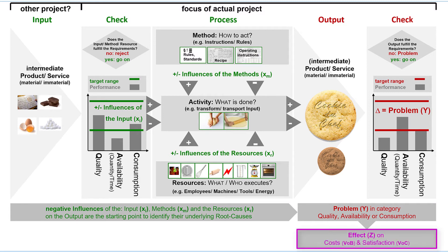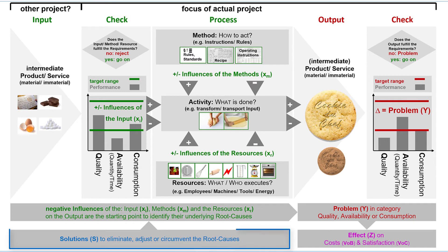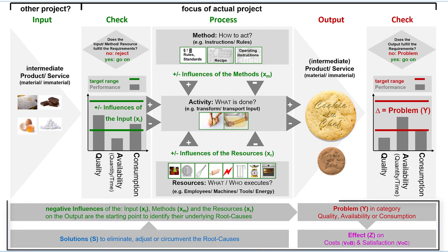If our process leads to a problem in the output, then the scope of our project lies in the process between the inputs that we cannot influence, up to the output with the identified problem. Every problem has effects. It can determine the customer satisfaction with the output — to know this effect you must listen to the Voice of the Customer (VOC). Problems also have a negative impact on the costs of an output — to know this effect you must listen to the Voice of Business (VOB). The answer is: if you know the root causes of the negative influences, develop solutions to eliminate, adjust, or circumvent the root causes.